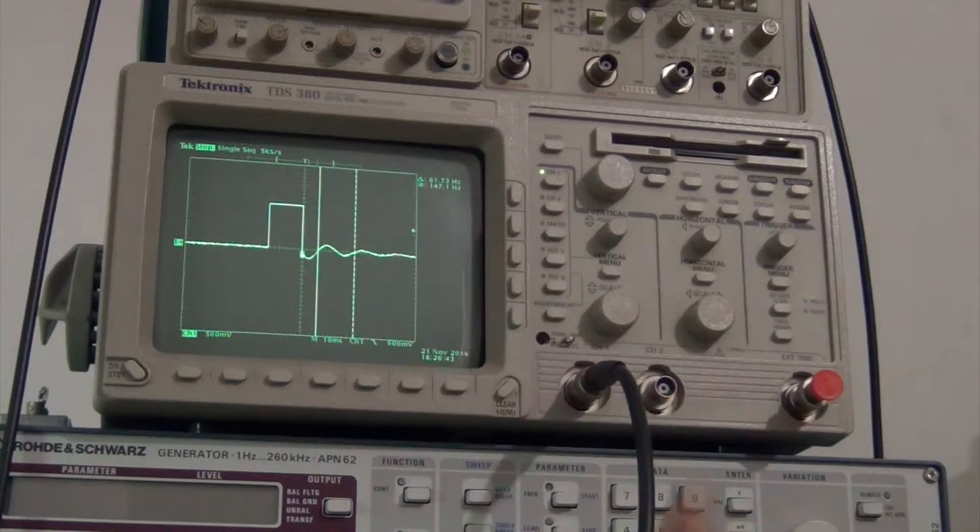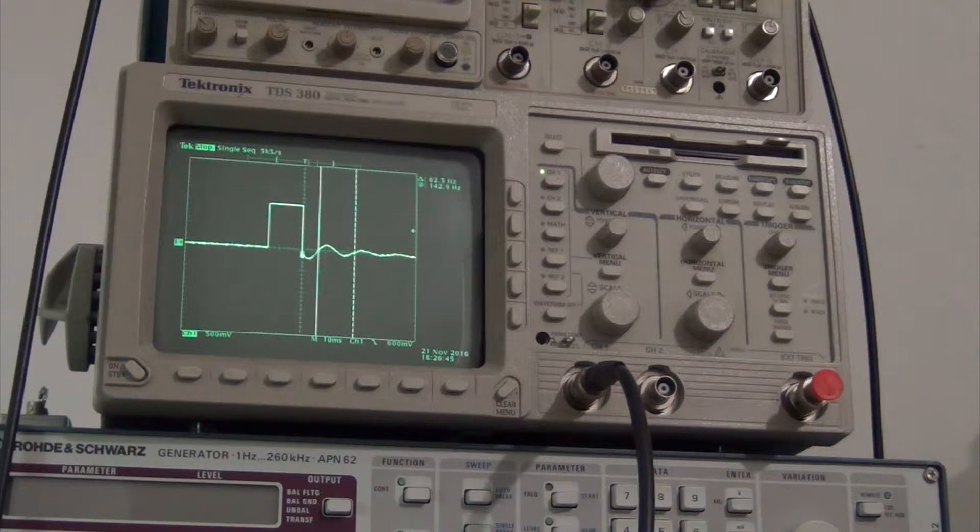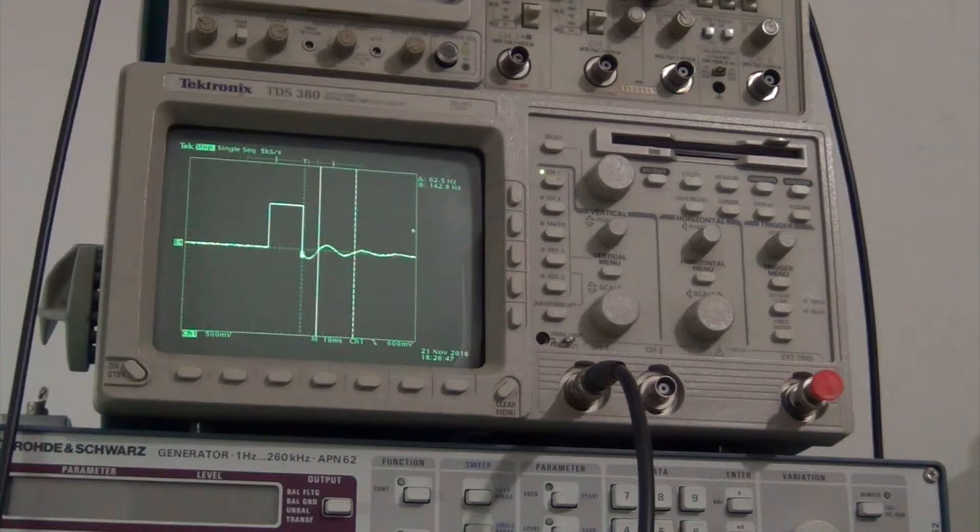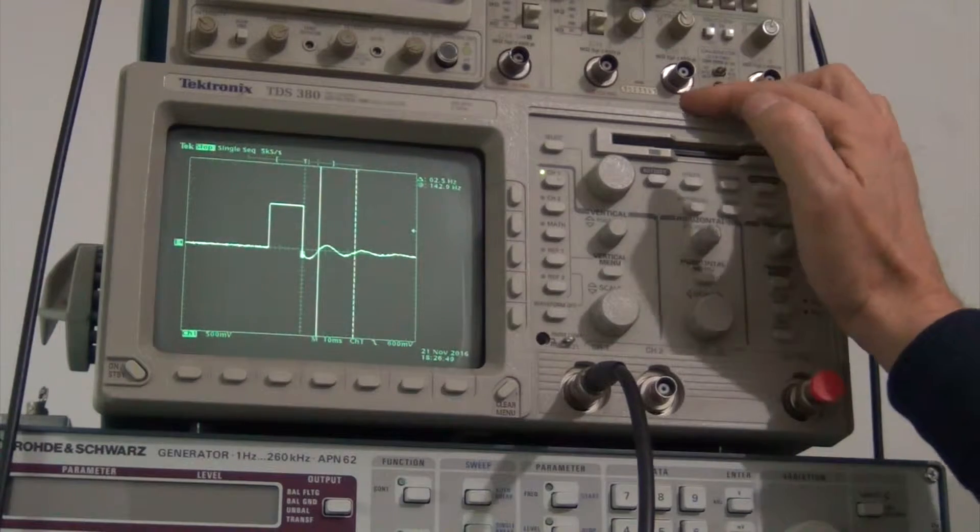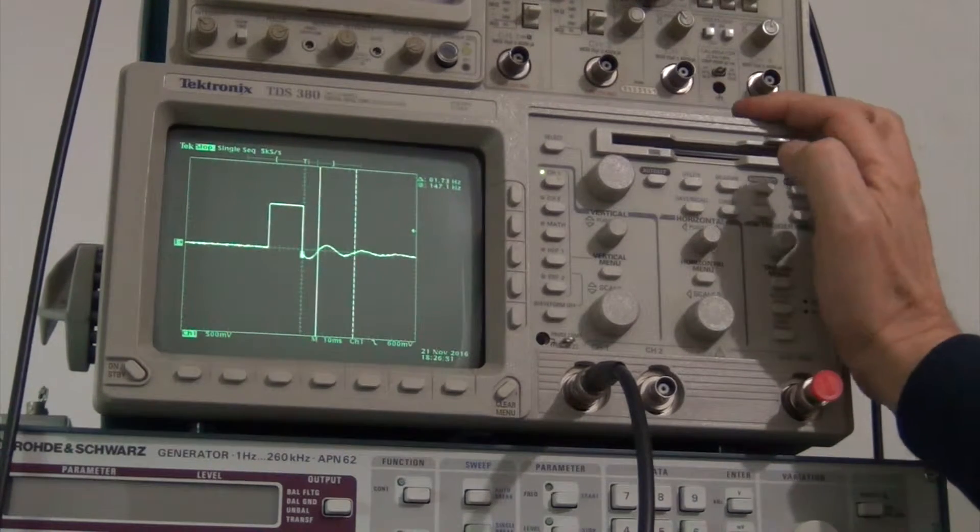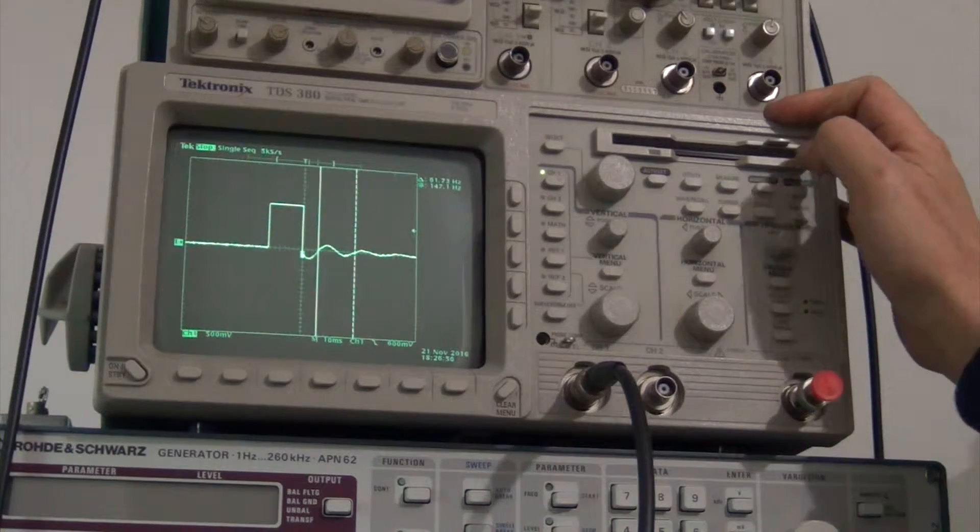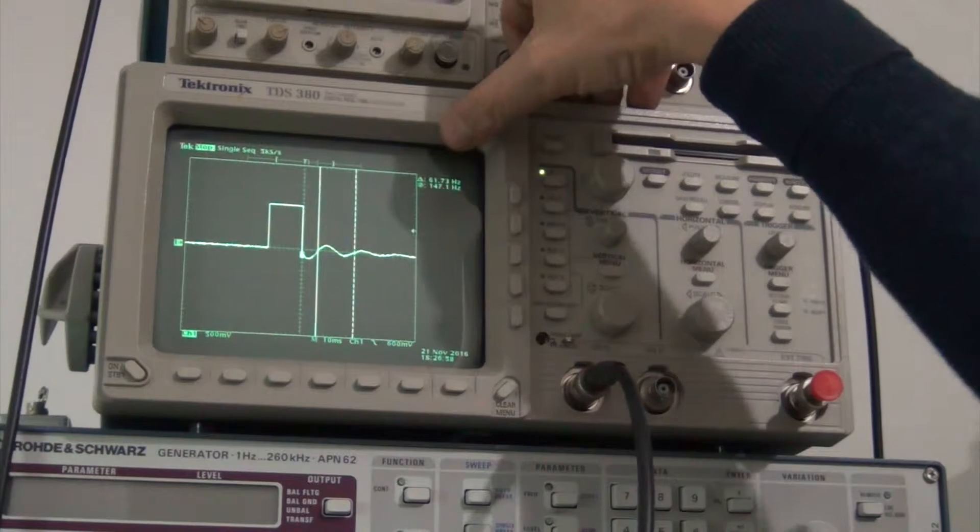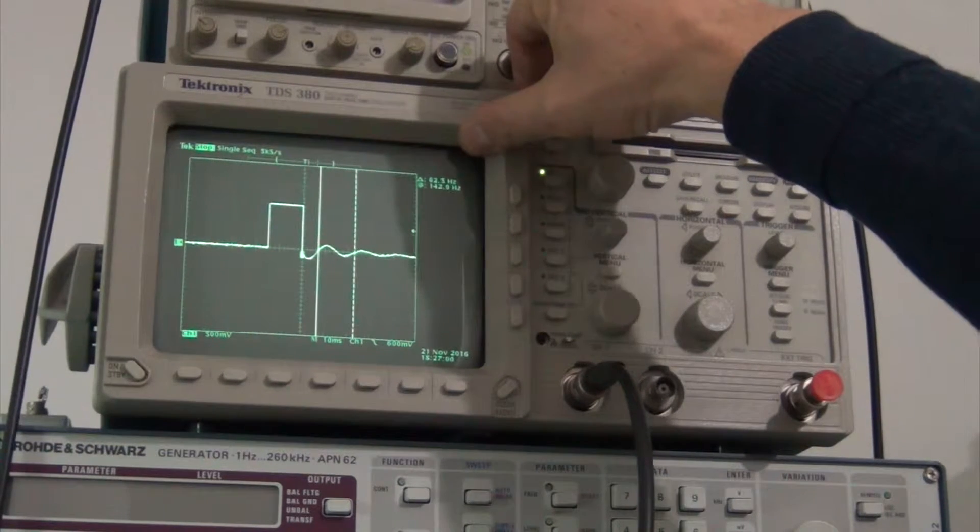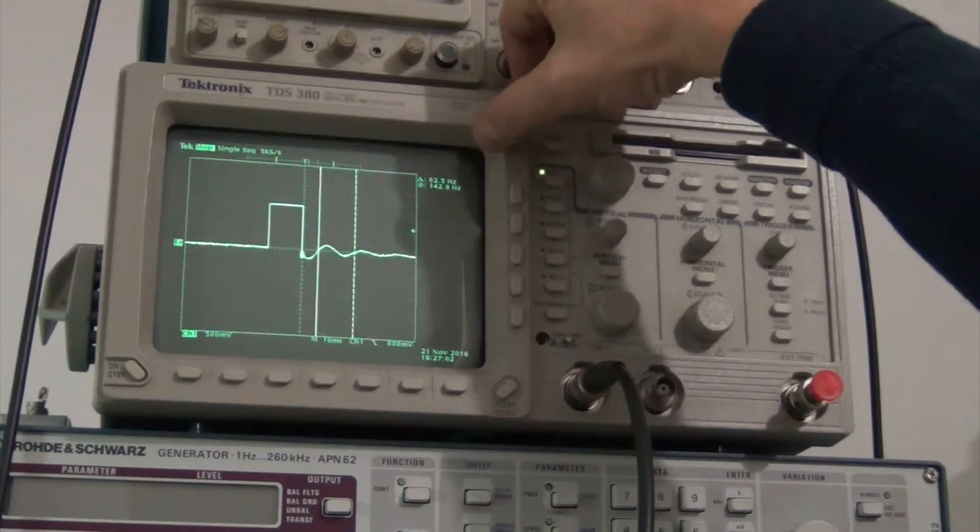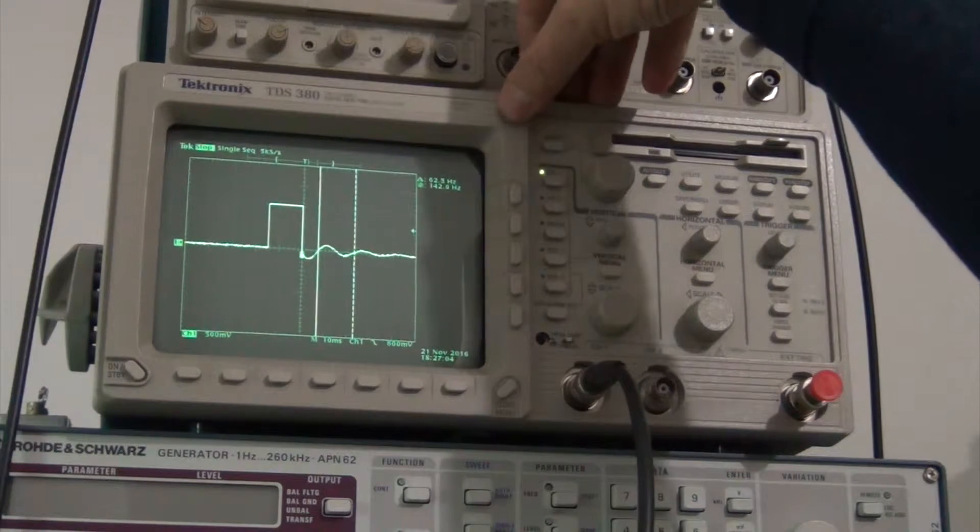So we have a very short pulse, very steep rise and fall time. And we see that we have a frequency of 61.73 hertz. That should be the resonant frequency of this loudspeaker because it's resonated on this frequency.